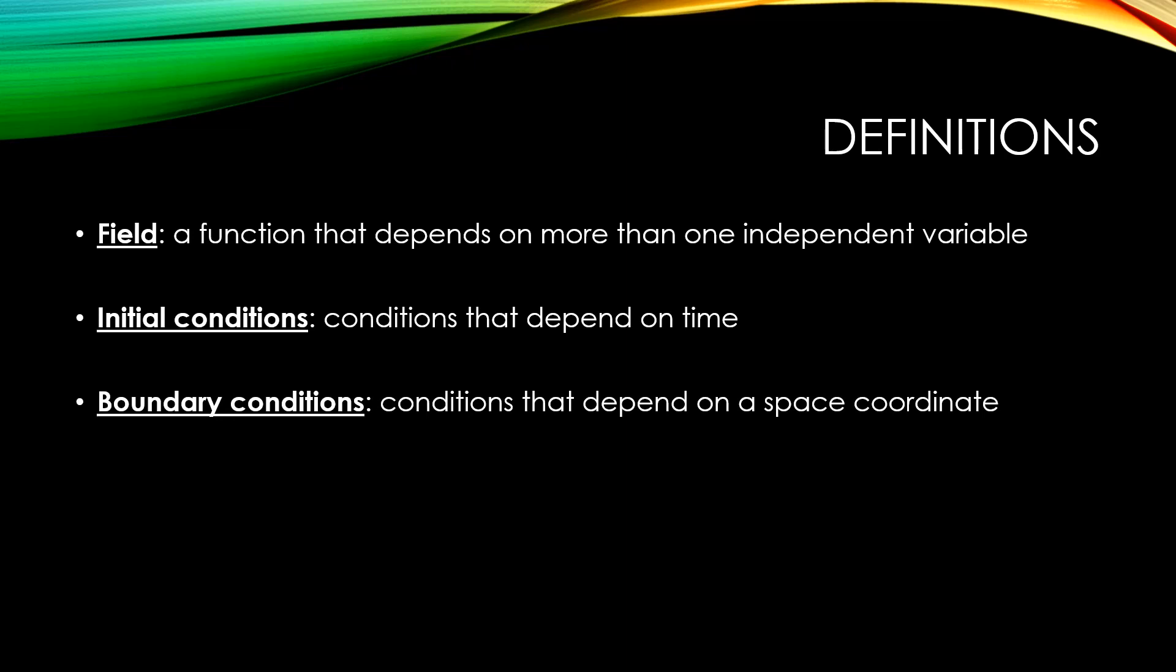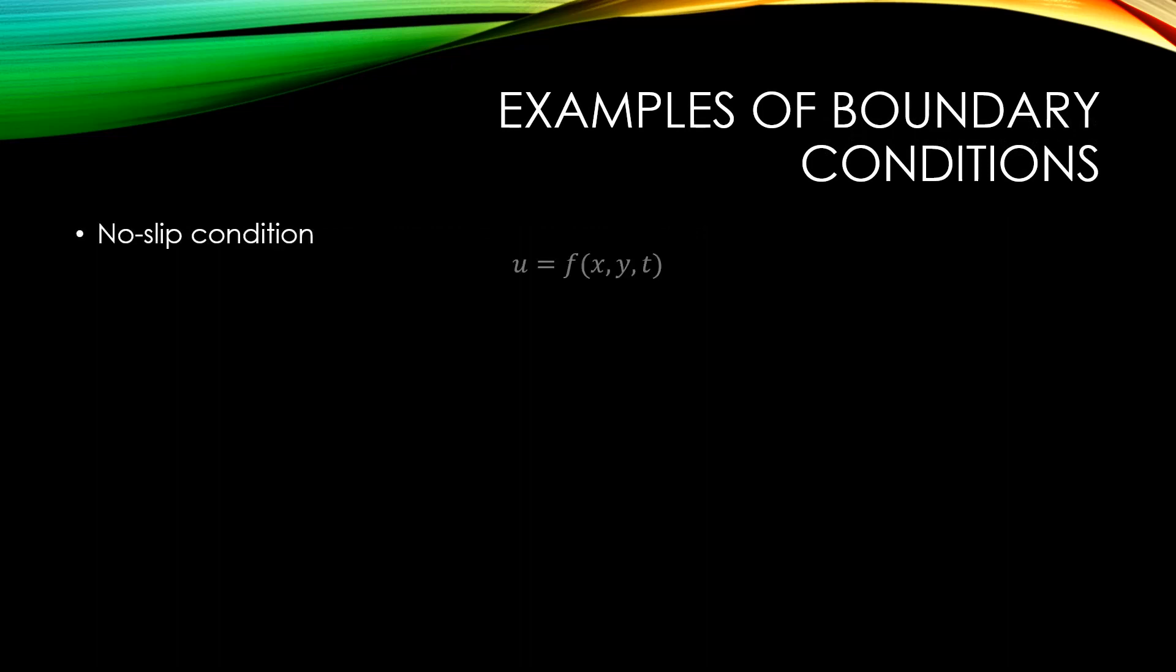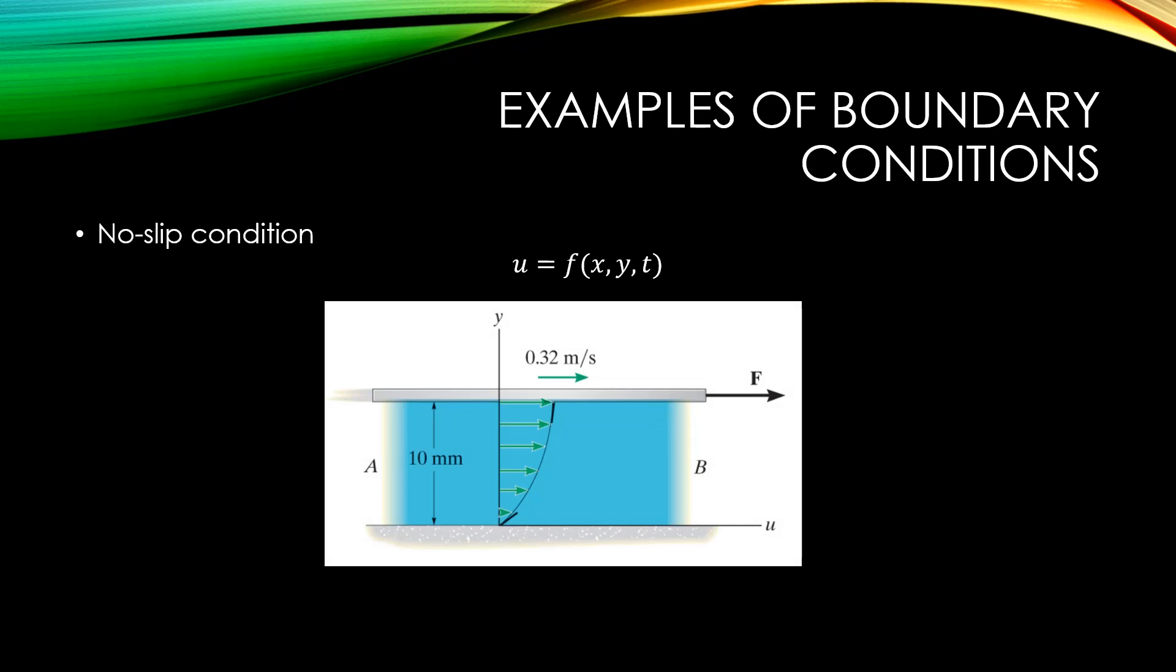We will define boundary conditions as conditions that depend on a space coordinate. Some examples of boundary conditions can be found by looking at the no-slip condition. Let's consider the flow in the figure.